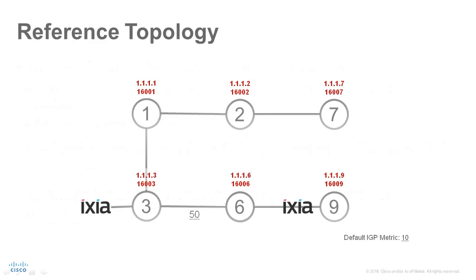This is the topology we will use to demonstrate the microloop avoidance functionality using Segment Routing. The link between node 3 and node 6 has a metric of 50, while the other links have a metric of 10. We are looking at traffic going from node 3 to node 9, as indicated by the blue line.